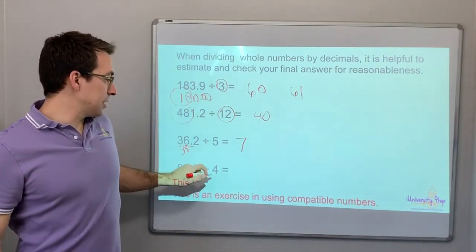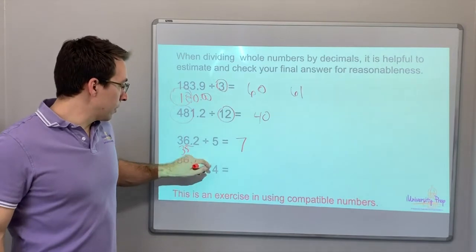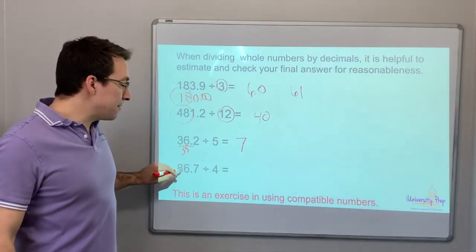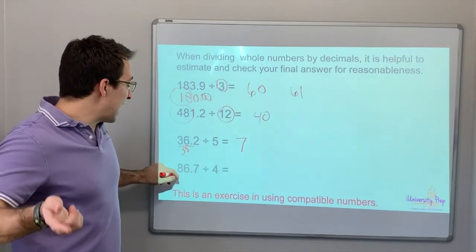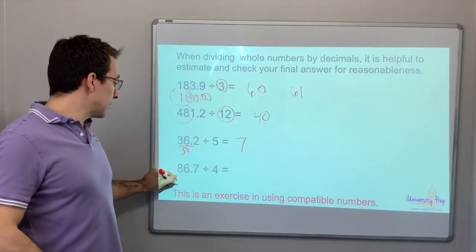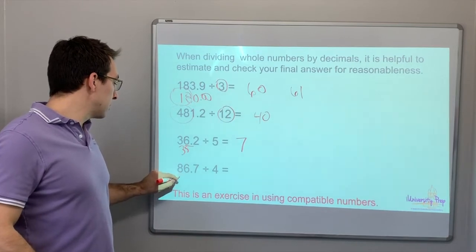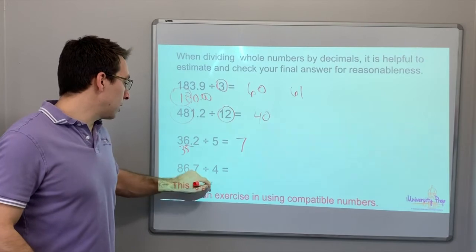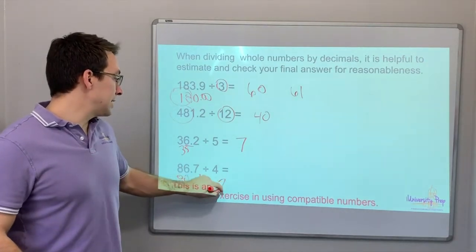Okay. This is good. 4 times 2 is 8, right? So, instead of saying, let's round down to 84, or what about this? What if we round to 88 divided by 4 equals 22.